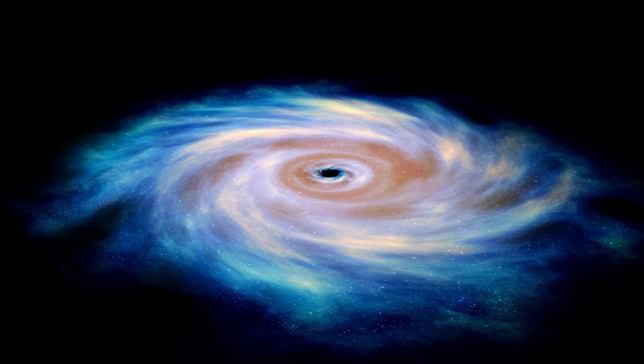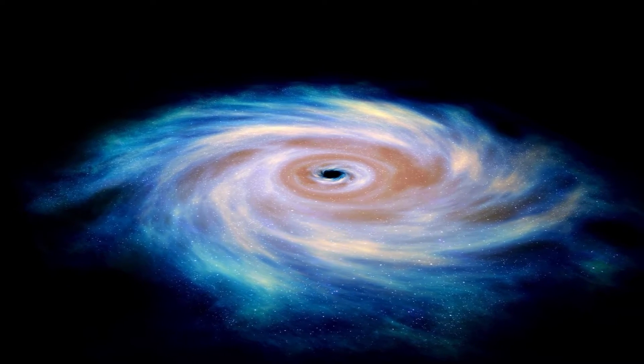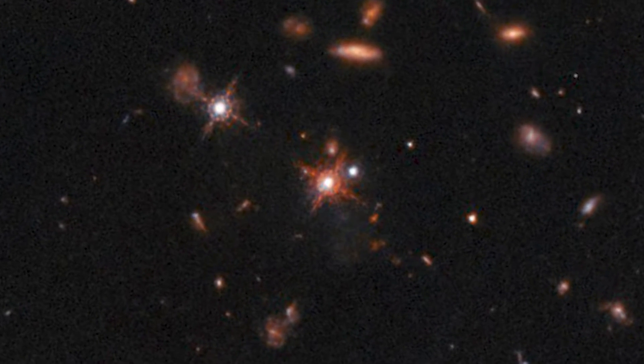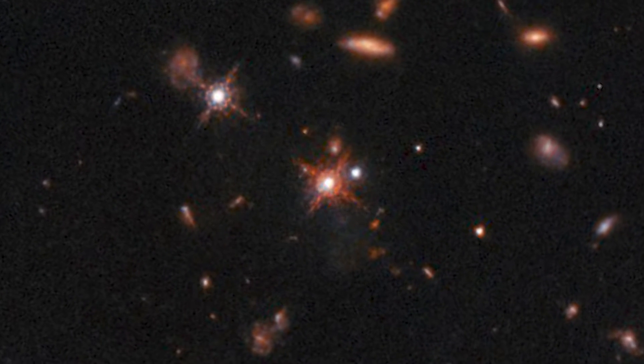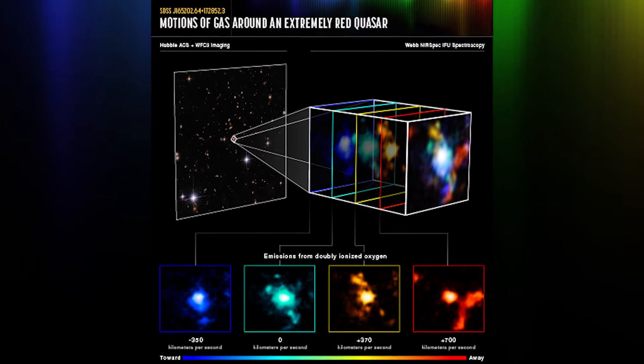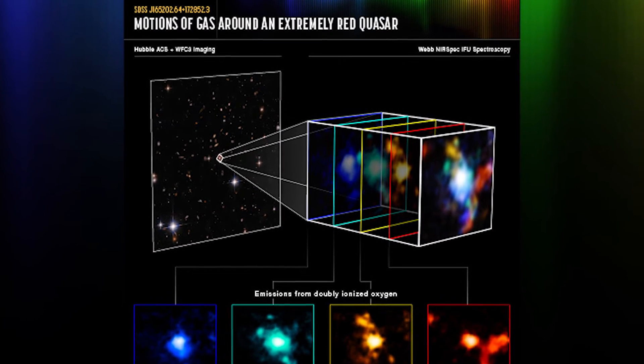Astronomers had speculated that the quasar's host galaxy was merging with an unseen companion, based on previous investigations by NASA's Hubble Space Telescope and other observatories that highlighted the quasar's tremendous outflows. It was surprising to the researchers because Webb's NIRSPEC data showed there was more than one galaxy in the vicinity.